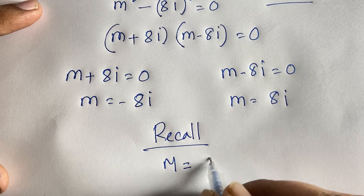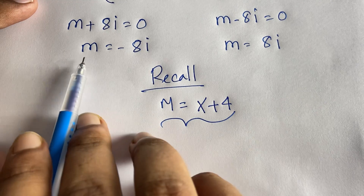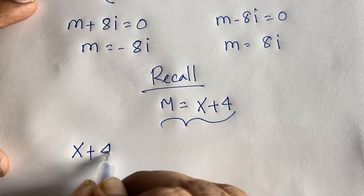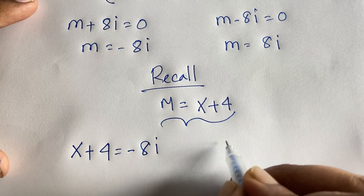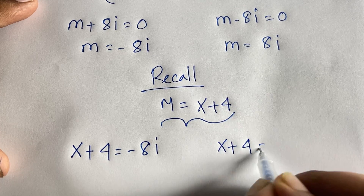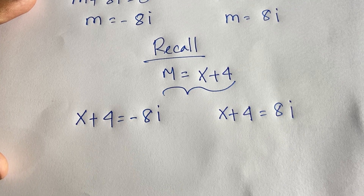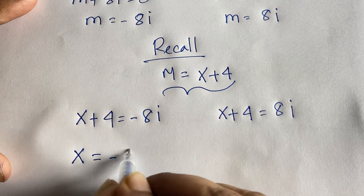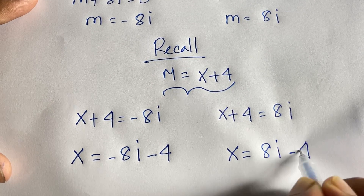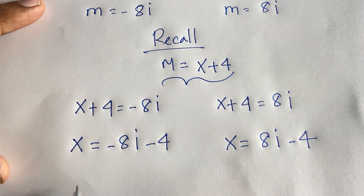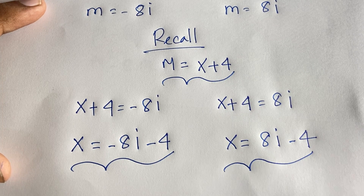Recalling that m = x+4: in the first case x+4 = -8i, giving x = -8i - 4. In the second case x+4 = 8i, giving x = 8i - 4. So our answers are x = -4 - 8i and x = -4 + 8i.